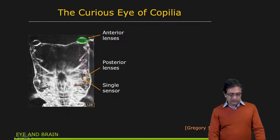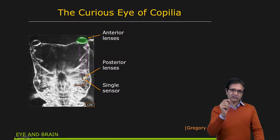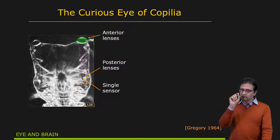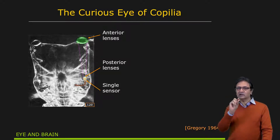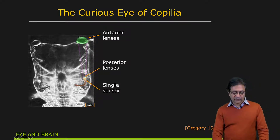This image is being formed down here. Then you have a posterior lens which has a single pixel, or single receptor, associated with it. It turns out that this combination of the posterior lens and the single sensor — that unit — is actually mechanically scanned to obtain the complete image that's being formed by the anterior lens.